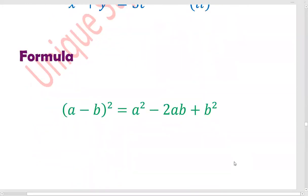I'll use the formula. The formula is a minus b whole square is equal to a square minus 2ab plus b square.